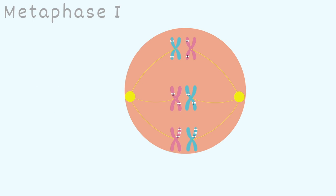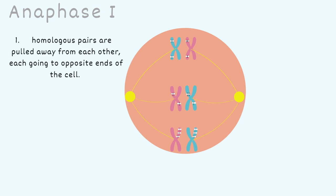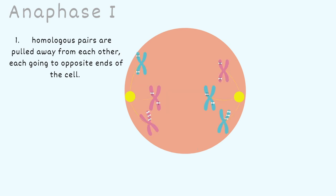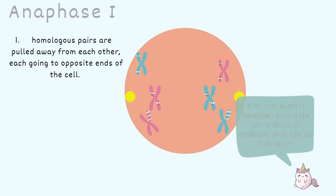Next, the cell moves on to anaphase 1. The most important thing that happens here is the homologous pairs are pulled away from each other, each going to opposite ends of the cell. At this point, we have 23 chromosomes pulled to each side — 23 on the right and 23 on the left. The only important thing to remember here is that the pairs are splitting and being pulled away from each other.